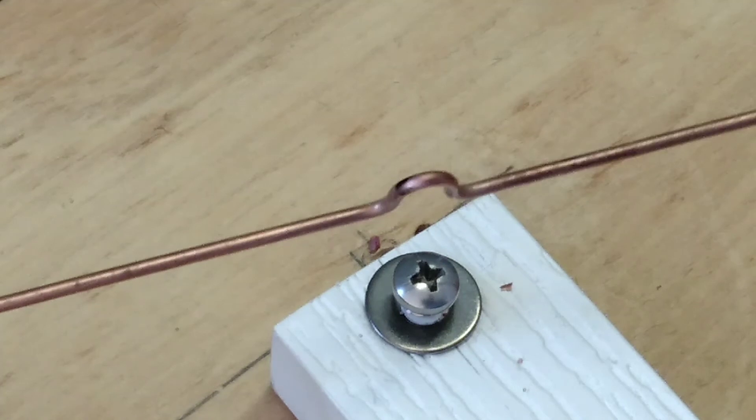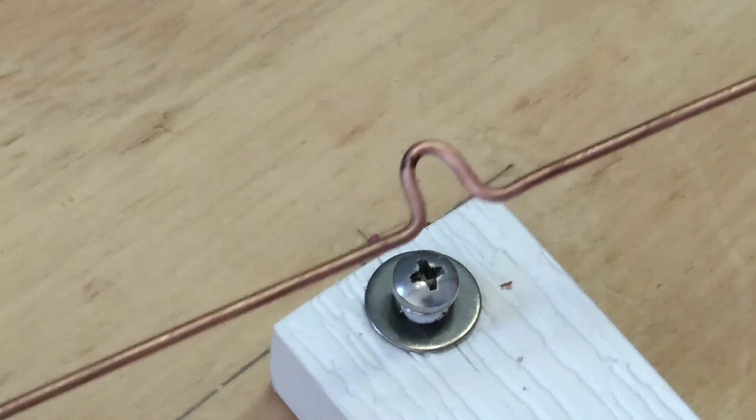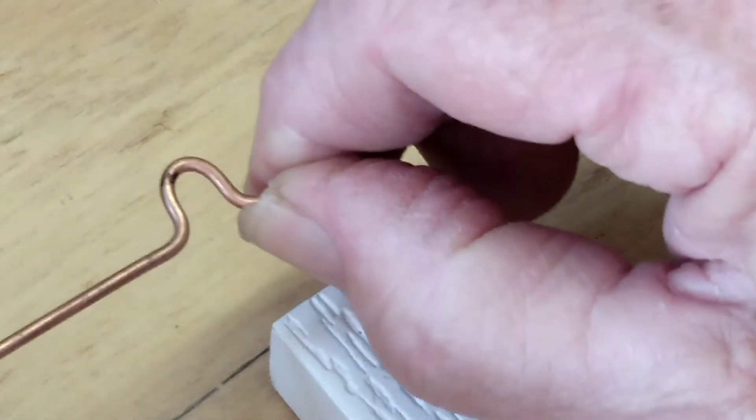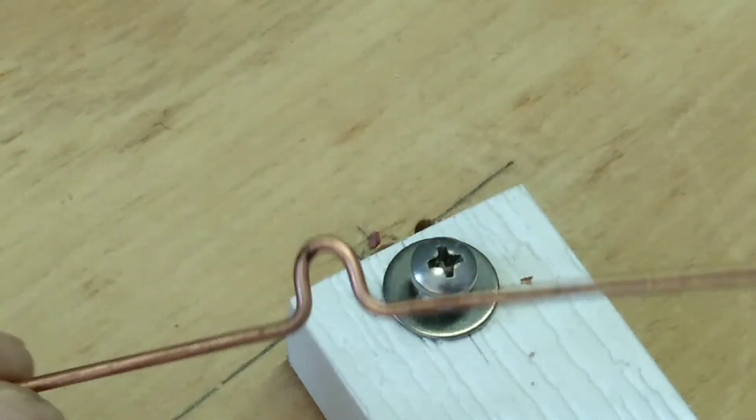It helps if you can see what you're doing. You can see that loop is just a little bit bent in the wrong way. So you can straighten it.